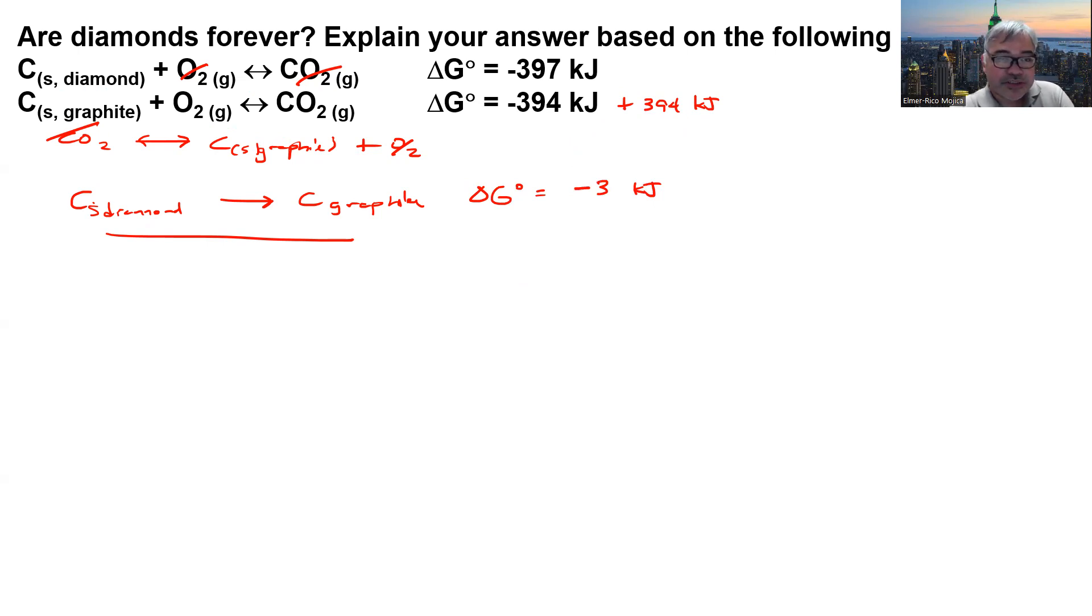Since the value of our delta G is negative, we could say it happens spontaneously. So diamonds are not forever thermodynamically. But if you're going to look at the value, it's not really so big. If ever this happened, it might take a while.